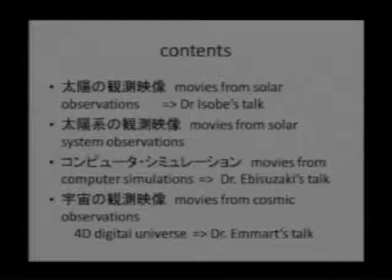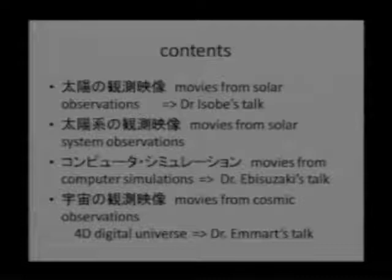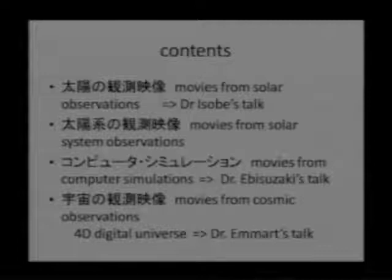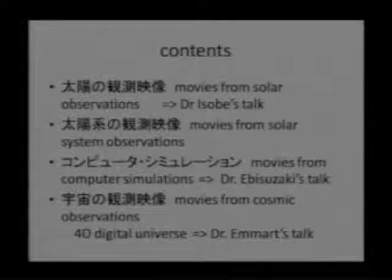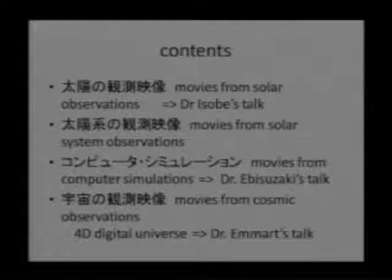The contents I will take you through: first, movies from solar observations, which Dr. Isobe will elaborate on later. For the solar system, Voyager and other spacecraft are used to capture images close to celestial bodies. On the other hand, the supercomputer has made rapid and mind-boggling advances, so with computer simulations we are able to gain more insights into space phenomena — for instance, a galaxy takes about 100 million years for one rotation, but with computer simulation we can understand even those phenomena.